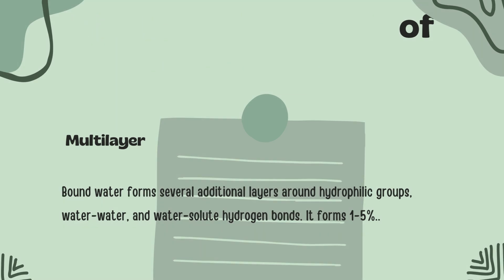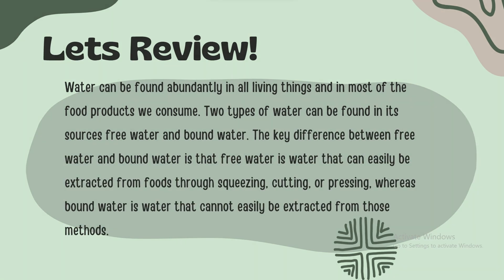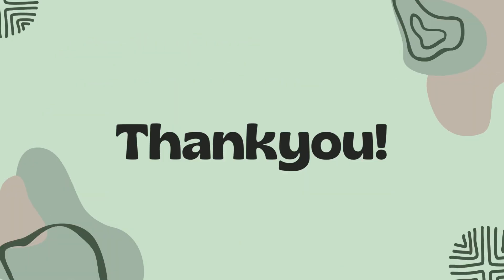Let's review our topic. Water can be found abundantly in all living things and in most of the food products we consume. Two types of water can be found in its sources: free water and bound water. The key difference between them is that free water can easily be extracted from foods through squeezing, cutting, or pressing, whereas bound water cannot easily be extracted using those methods. Thank you for listening.